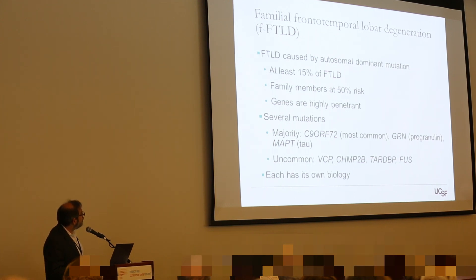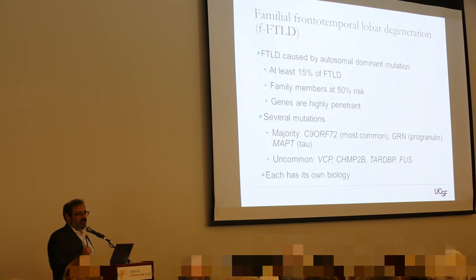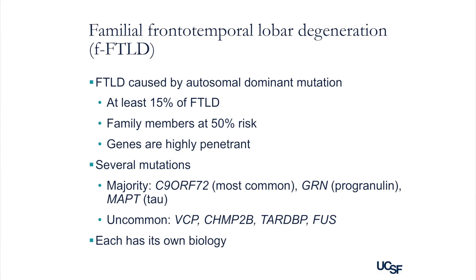In Alzheimer's disease, major genetic changes only account for about 1% of cases. But in frontotemporal degeneration, it's more like 15% - so the contribution from these major changes is higher, although the majority are still sporadic. As you know, 50% of people in such a family are at risk.